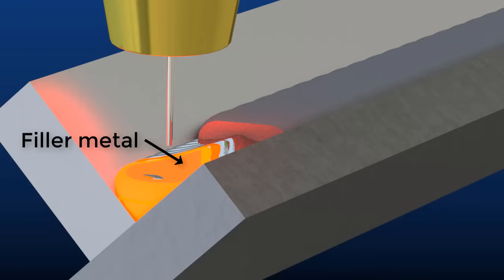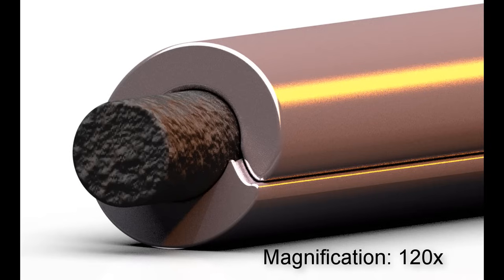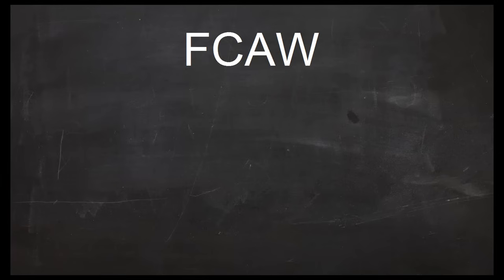Because the wire electrode melts as it's being used, flux core is called a consumable electrode process. Flux core welding always adds filler metal to the joint. The job of the flux inside the electrode depends on which type of flux cored process it was designed for. You see, there are two main types of flux core arc welding.